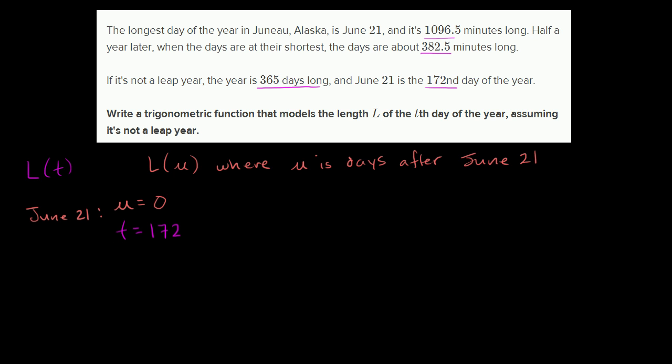So what's the relationship between U and T? Well, it's shifted by 172 days. U is going to be equal to T minus 172. Notice when T is 172, U is equal to 0. So let's figure out L of U first, and then later we can just substitute U with T minus 172.